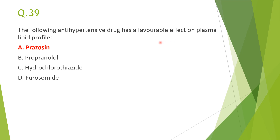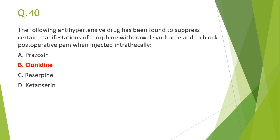Next: the antihypertensive drug with a favorable effect on plasma lipid profile is A, prazosin, an alpha-1 blocker. Propranolol, hydrochlorothiazide, and furosemide cause dyslipidemia — they increase LDL and decrease HDL, which is harmful. Prazosin has a favorable effect on plasma lipid profile.